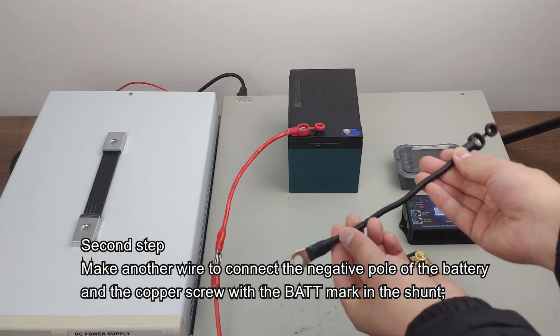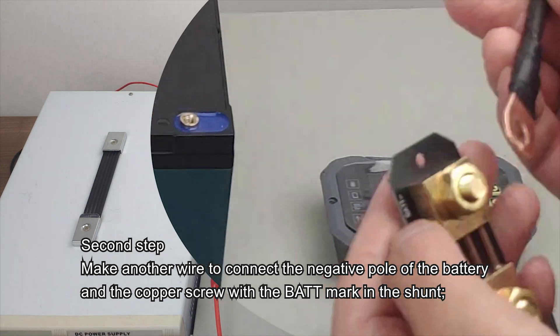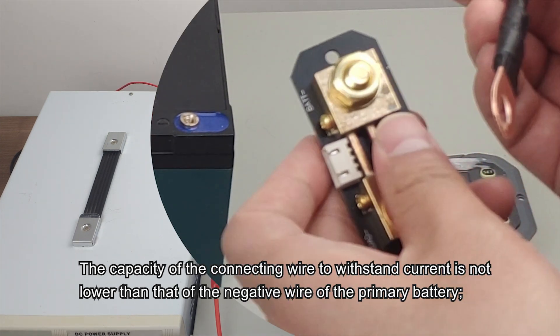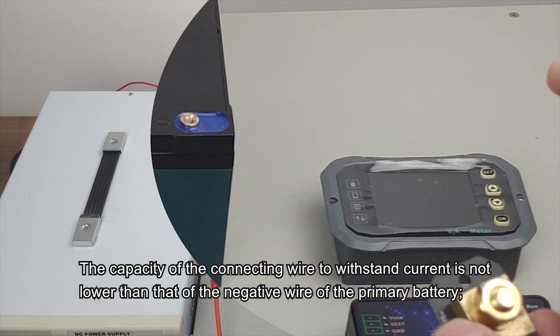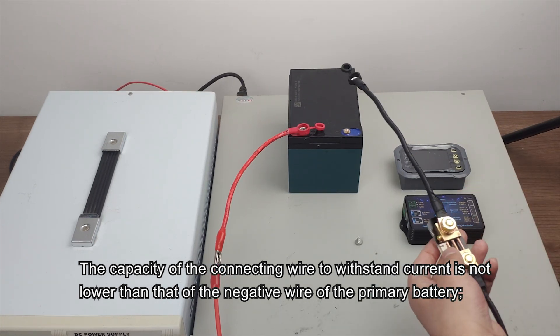Second step. Make another wire to connect the negative pole of the battery and the copper screw with the bat mark in the shunt. The capacity of the connecting wire to withstand current is not lower than that of the negative wire of the primary battery.